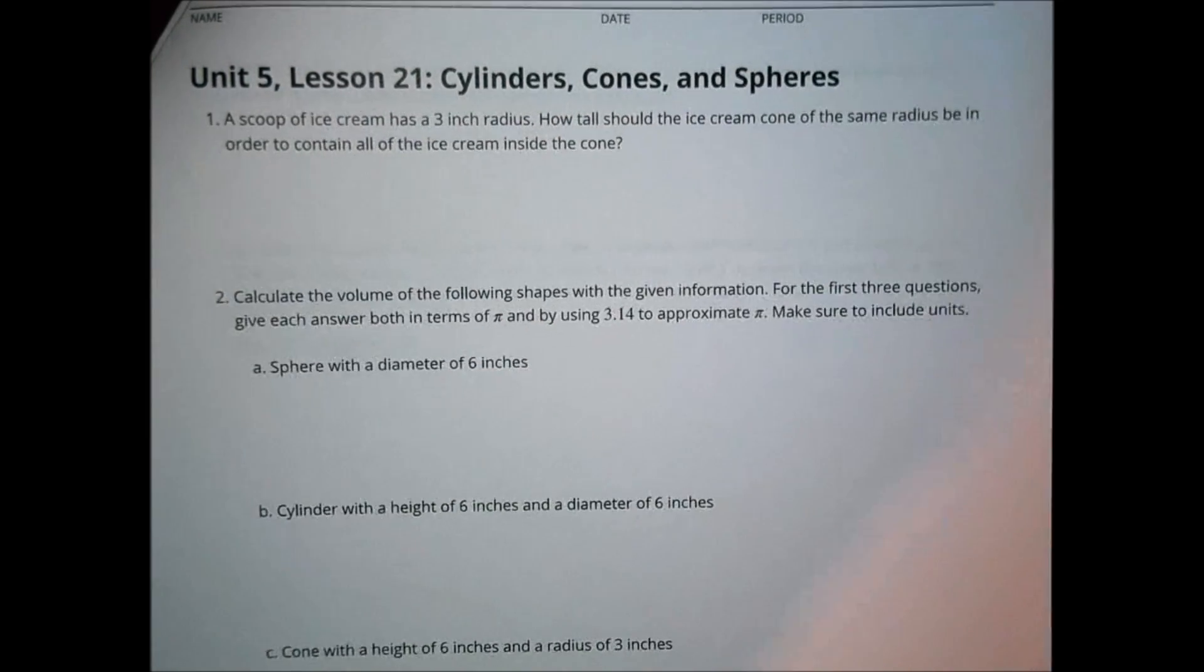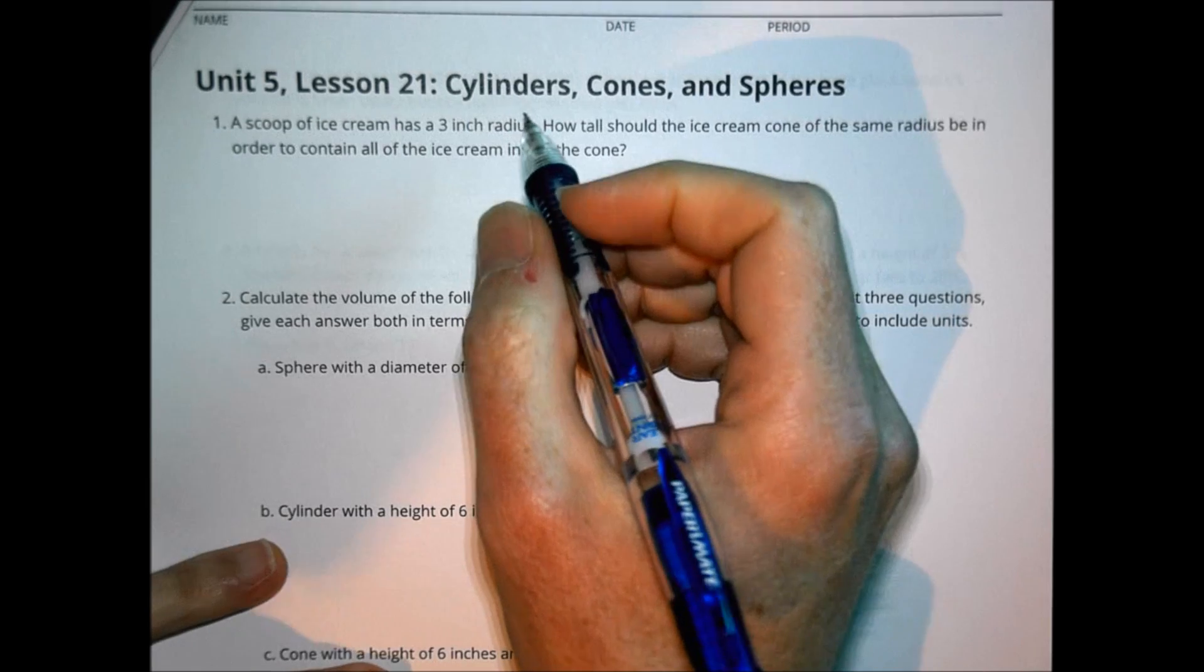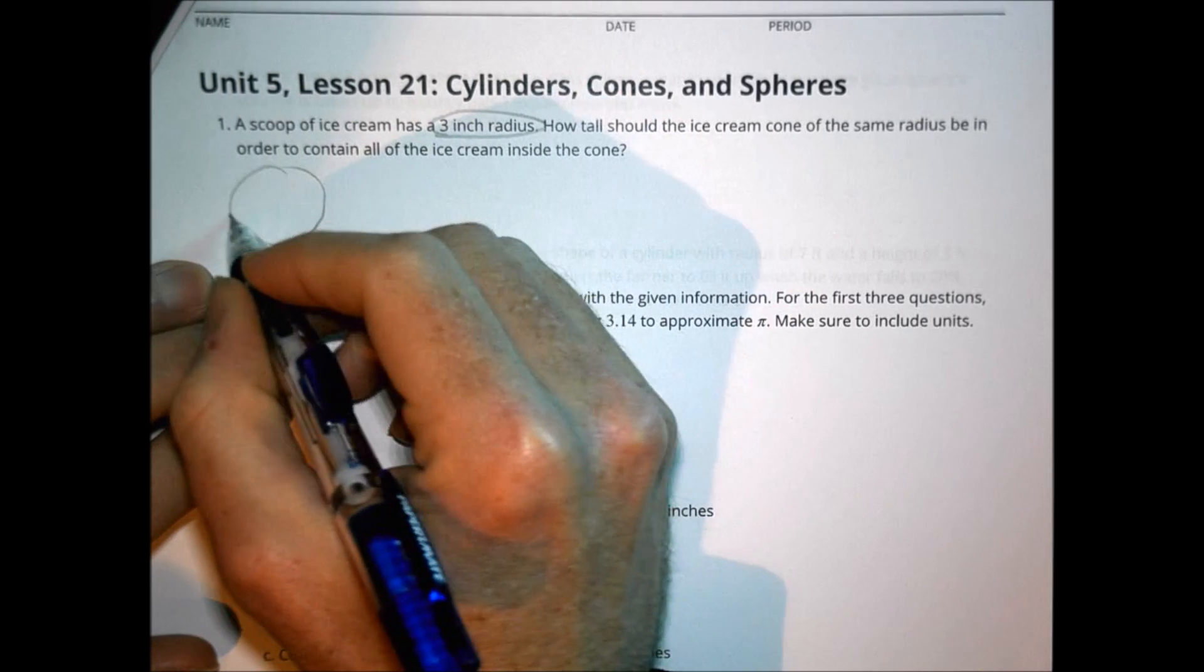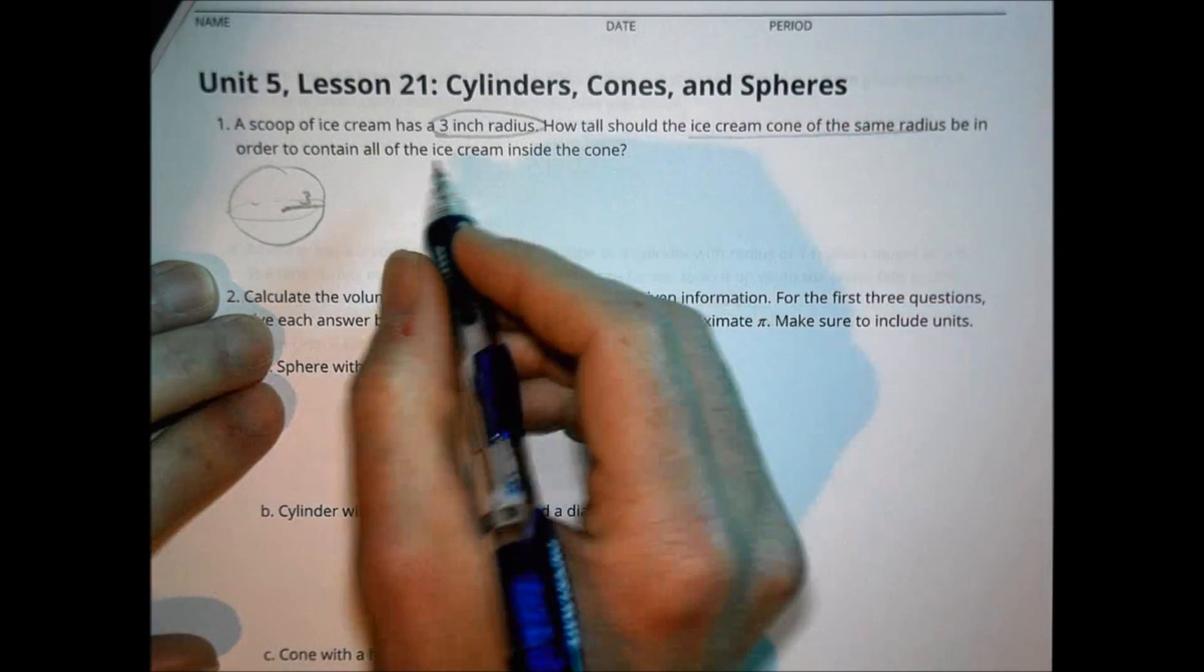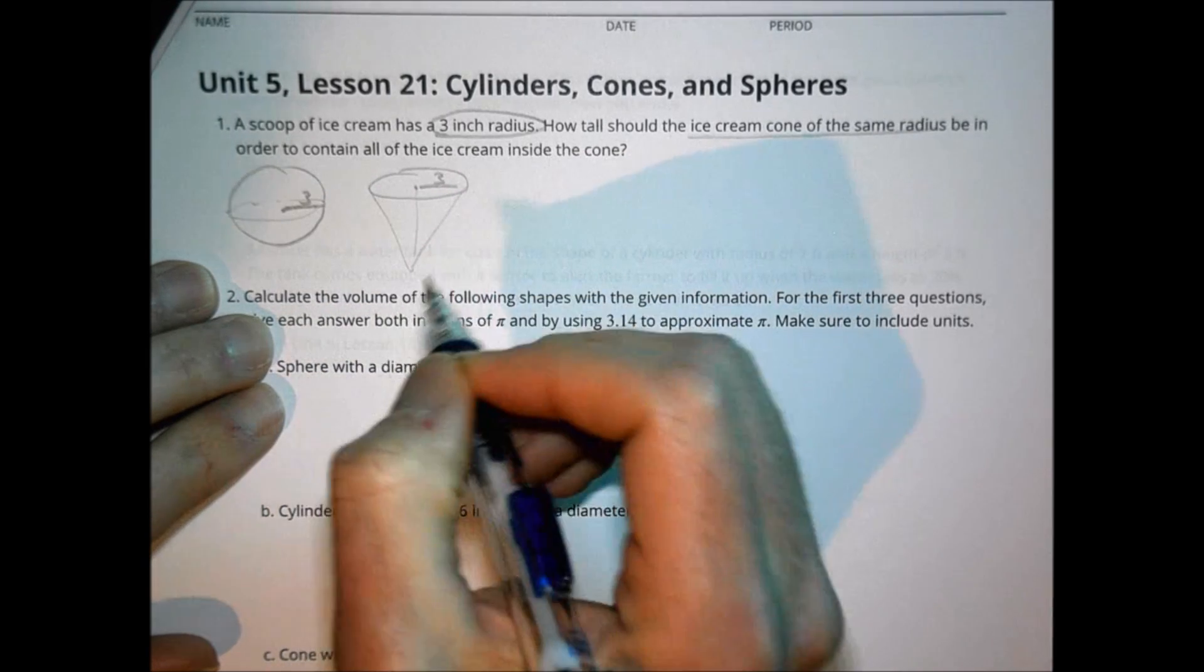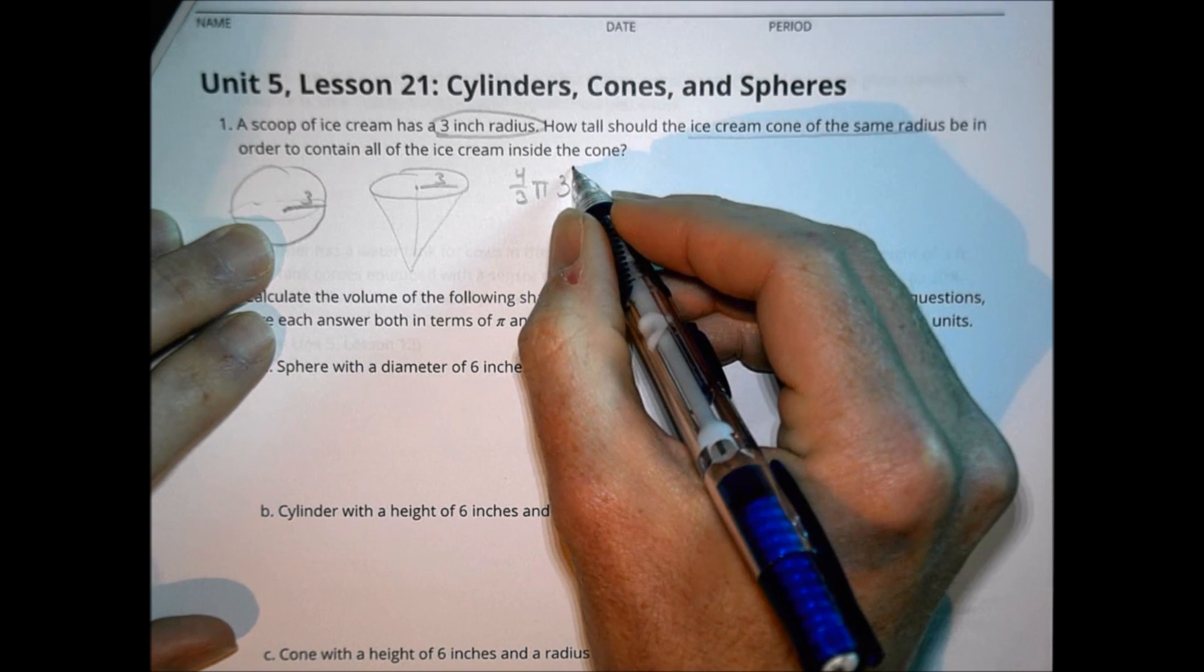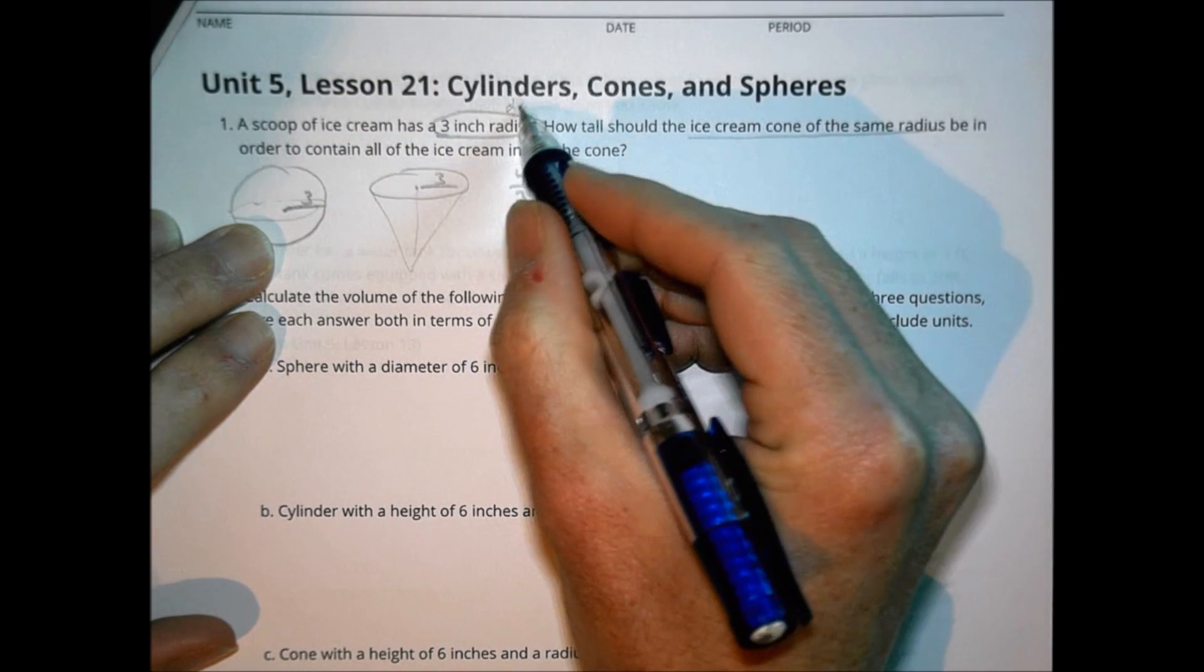Number one. First of all, this one, I'm going to go through how to solve this here. My initial teacher answer key, at least one from this year series, I think has a wrong answer, but let's talk through the answer together. And so the scoop of ice cream has a three inch radius. So we have a scoop of ice cream. It has a three inch radius. How tall should the ice cream cone of the same radius be in order to fill and contain all ice cream? So we have a cone with a three inch radius there. We want to know how tall it should be in order to get all the ice cream in it.